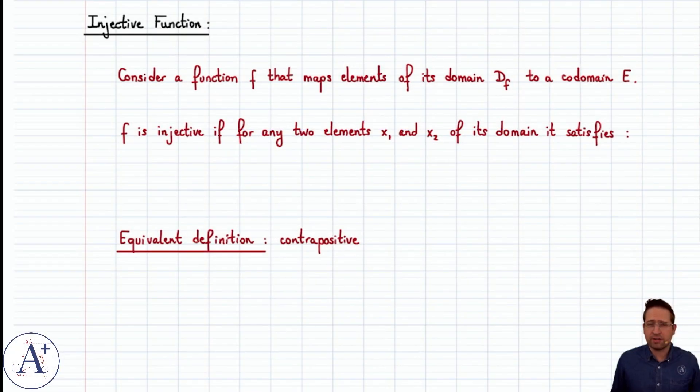An injective function is a special kind of function that maps elements from its domain to a codomain in such a way that any element in the codomain has at most one pre-image under f. What that means in practice is that f preserves differences, and so we're going to define an injective function in the following way. We're going to say that f is injective if for any two elements x1 and x2 of its domain it satisfies the following.